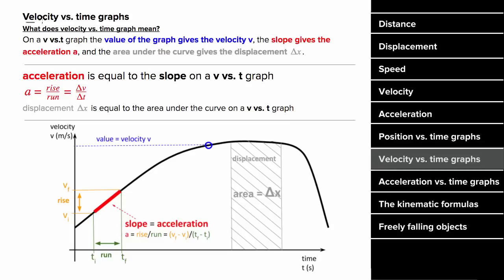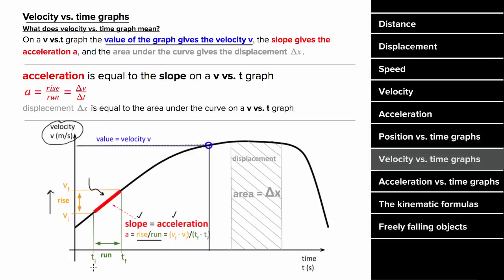How do you interpret a velocity versus time graph? The value of the vertical axis gives you the velocity at that particular moment in time. The slope at any given moment equals the acceleration of the object. You find the slope using rise over run — the rise is the change in V, the run is the change in T. Since change in velocity over change in time is the definition of acceleration, the slope on a velocity graph equals the acceleration. Also, the area under any section of the graph between two times equals the displacement between those times.